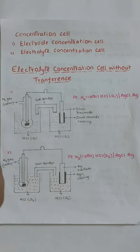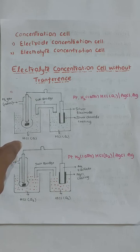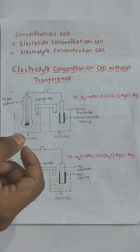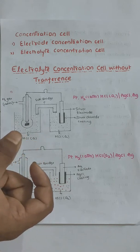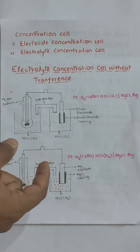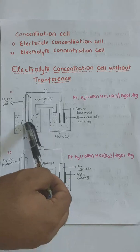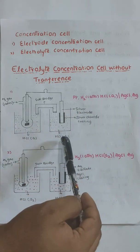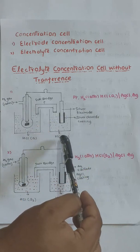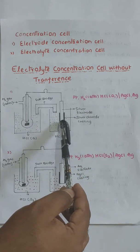In this setup we take two cells. In the first cell, on the left side we have a standard hydrogen electrode — a platinum wire with H2 gas at one atmospheric pressure — dipped in a solution of HCl having activity A1. On the right side we dip a silver electrode coated with AgCl into the same HCl solution of activity A1, where A1 is the activity of the hydrogen and chloride ions in solution.